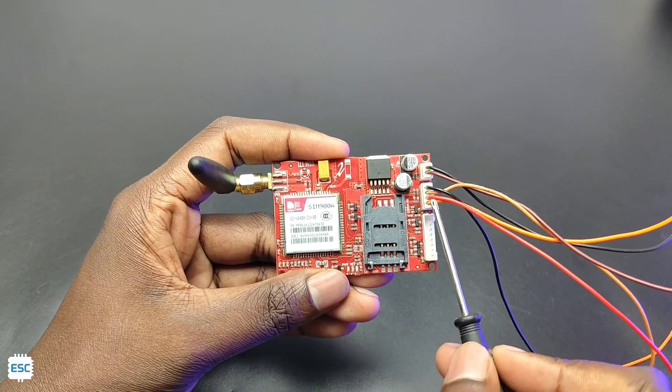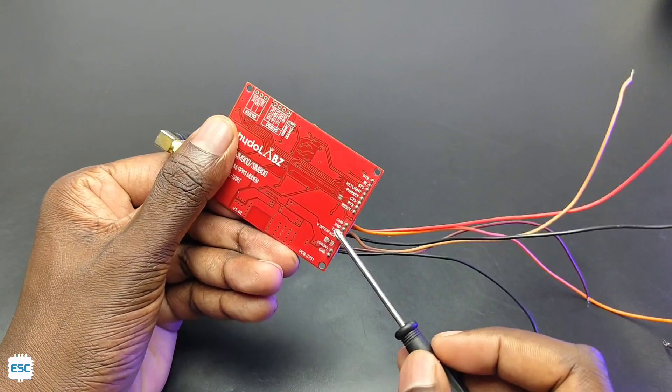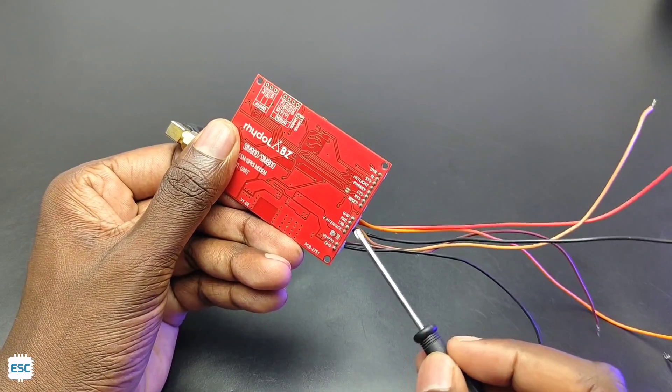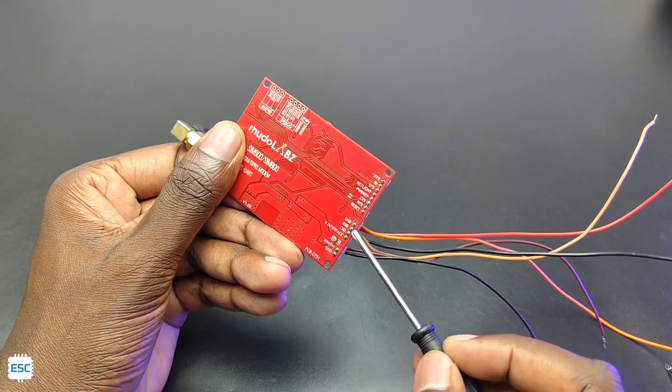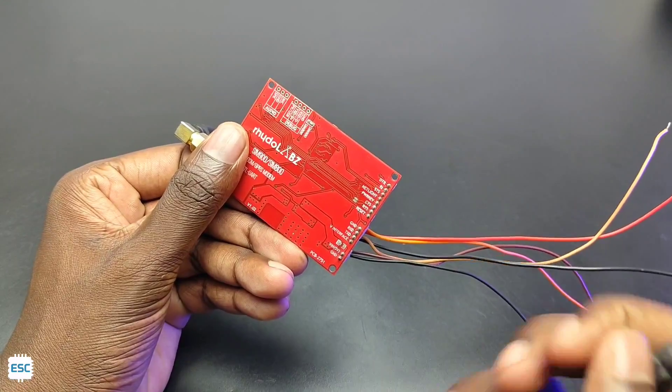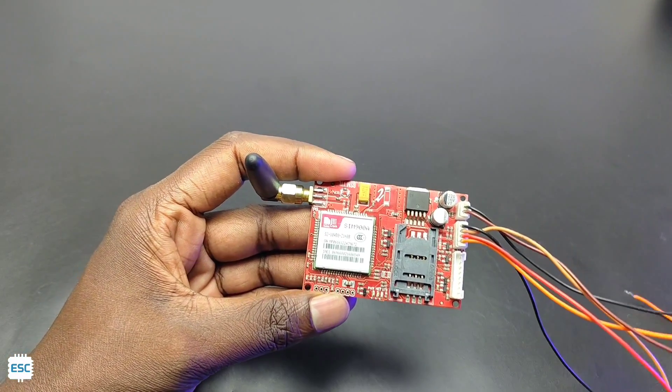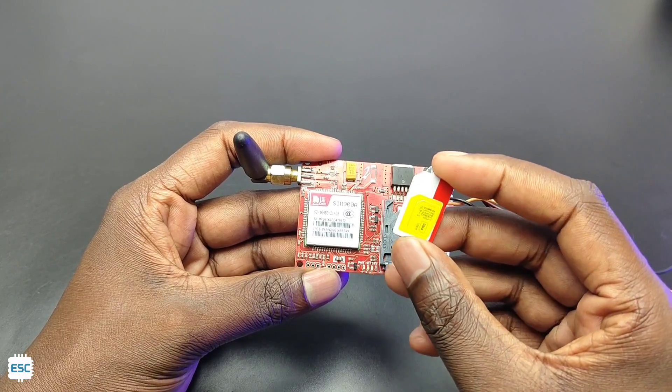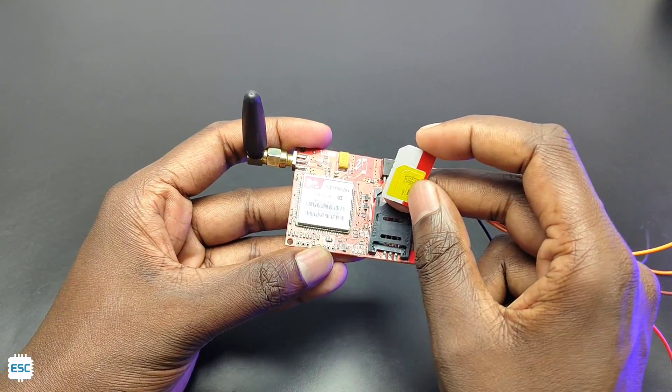So here is the SIM900 module. It has two VCC pins and two ground pins, then an RX pin and a TX pin. This module supports 2G only, so make sure that your SIM supports 2G. First I inserted the SIM on its socket.